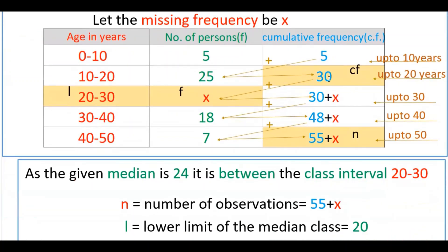Continuing the cumulative frequencies: 30 plus x, then 30 plus 18 is 48 plus x, and then 48 plus 7 is 55 plus x. So up to 50 years the total number of persons is 55 plus x, which is the n value. The median is given as 24, which lies between the class interval 20 to 30.